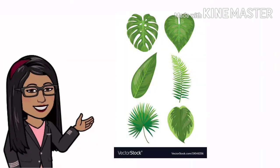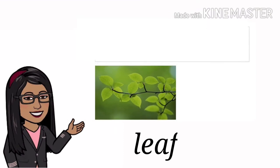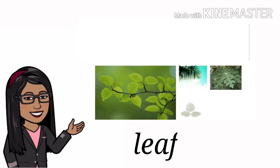Leaf. The leaf makes food for the plant. Most leaves are green in color. Leaves have different shapes and sizes.